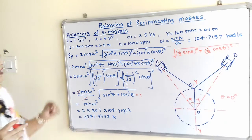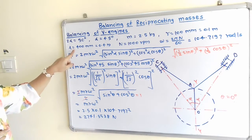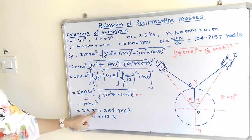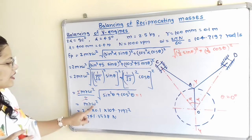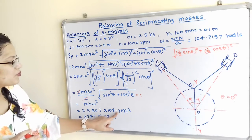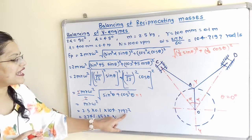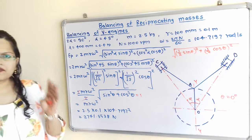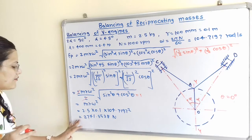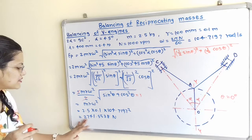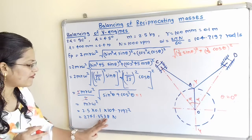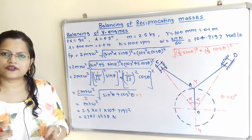Substituting the values: FP = 2.5 × 0.1 × (104.7197)² = 2741.5538 N.